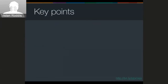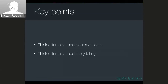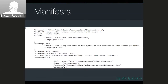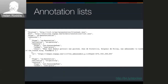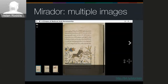The spoiler for this whole thing is we want to get across the idea that you should think differently about the data you can express in a manifest, and equally the way you can express the manifest online. You all know what a manifest is, you all know what an annotation list is. The key thing is that we are using manifests to describe individual images or series of images, and we're using the annotation list to describe regions of those images.